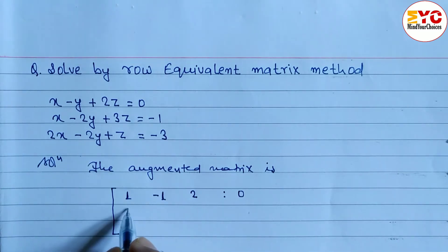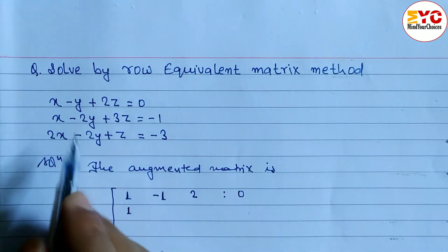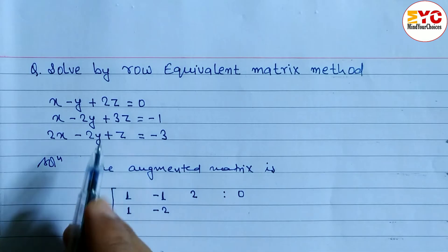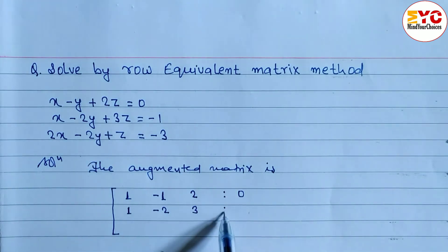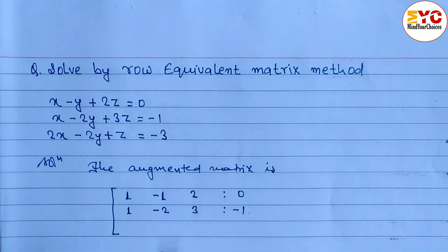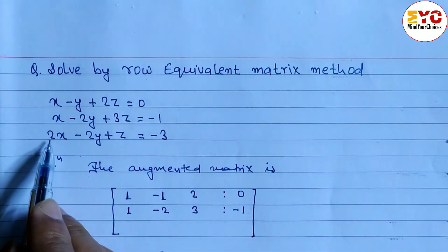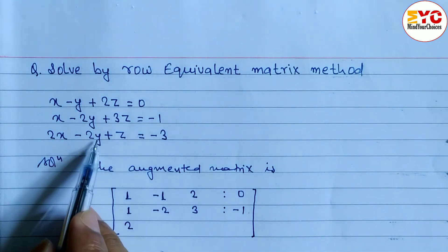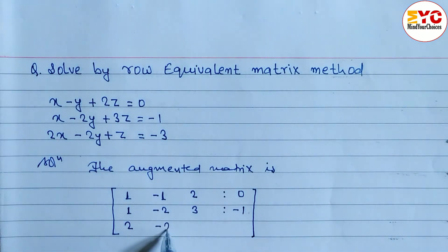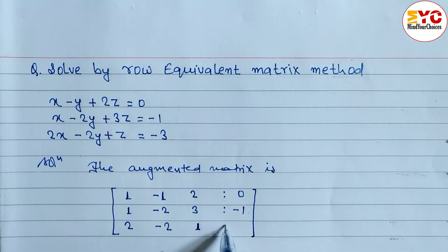For the second equation, coefficient of x is 1, coefficient of y is -2, coefficient of z is 3, and the constant is -1. For the third equation, coefficient of x is 2, coefficient of y is -2, coefficient of z is 1, and the constant is -3.